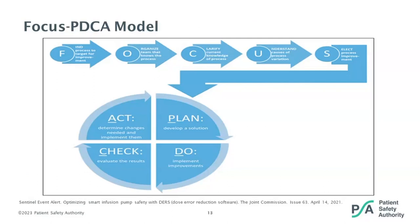This slide shows the FOCUS PDCA model as published in the ASHP guidelines. This framework can be useful for the MUE process, so I'll walk through the nine steps. Number one: find the process to target for improvement. This need could be identified by a number of sources — a voluntary incident report or staff report of a concern may prompt this investigation.